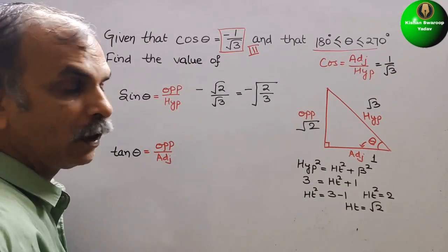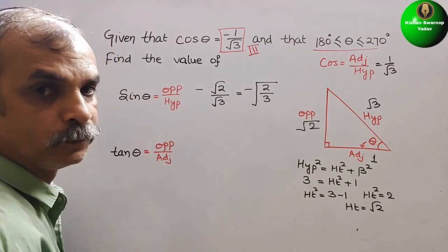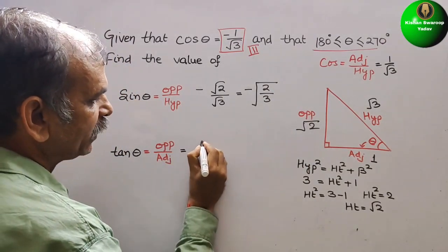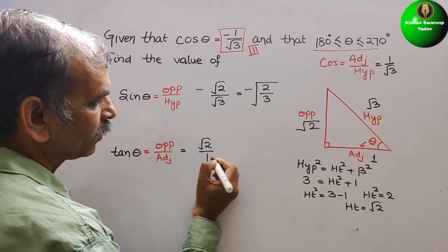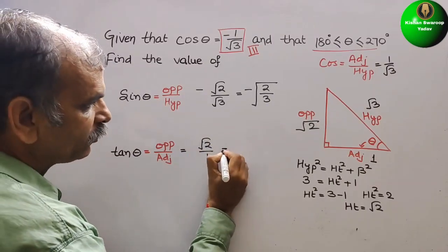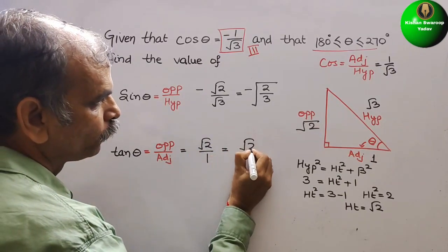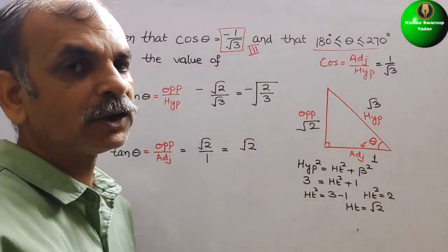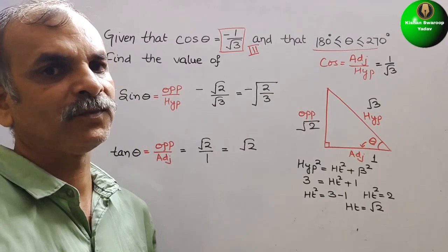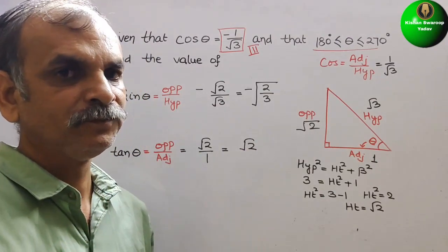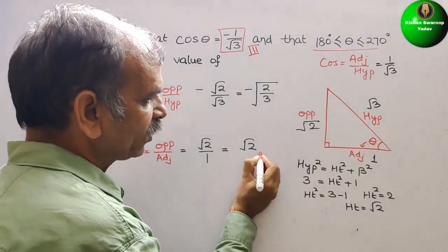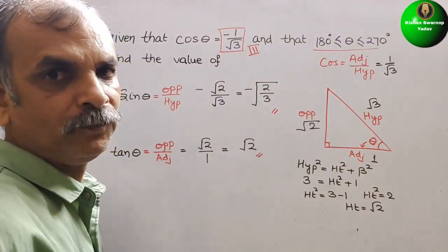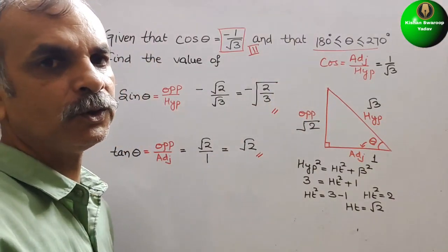Now for tan theta: tan is opposite by adjacent. The opposite is root 2 and the adjacent is 1, so this is equal to root 2 by 1, that is equal to root 2. Now in the third quadrant, tan is positive. So your final answers are: sin theta equals minus root of 2 by 3, and tan theta equals root 2.